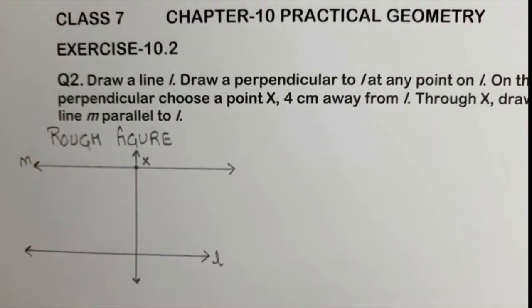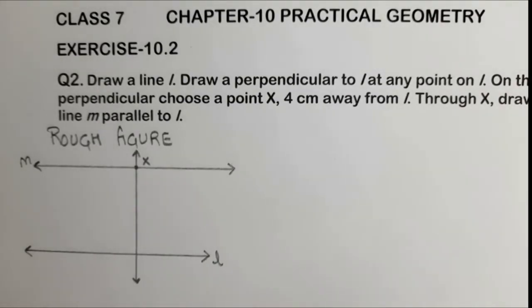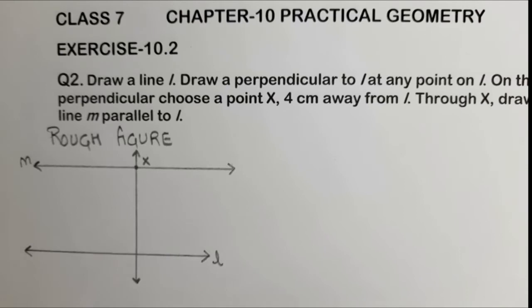Now, we are going to construct exercise 10.2, question number 2. Draw a line L and draw a perpendicular to L at any point on L. On the perpendicular, choose a point X, 4 cm away from L, and through X, draw a line M which is parallel to L.